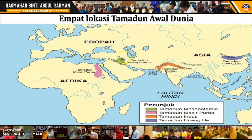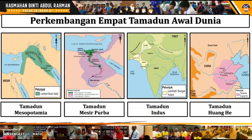Tamadun Mesopotamia berkembang di Sungai Tigris dengan Sungai Euphrates. Tamadun Mesir Purba pula berkembang di sepanjang Sungai Nil. Untuk Tamadun Indus pula, dekat Sungai Indus. Manakala untuk Tamadun Huanghe pula, di sepanjang Sungai Huanghe. Itulah sedikit mengenai lokasi, dan kita akan tengok lokasi ini dengan lebih lanjut lagi. Kita pergi kepada perkembangan 4 Tamadun Awal Dunia.